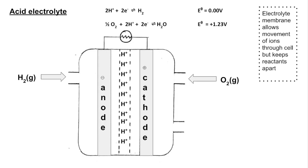We're going to focus on the hydrogen-oxygen fuel cell and then finish with the methanol fuel cell. The first hydrogen-oxygen fuel cell is one with an acid electrolyte, so you'll notice in the half equations we've got H⁺ ions. Hydrogen gas is coming in at the left going to the anode, and oxygen is going in at the right going to the cathode. The electrical potential for the oxygen half cell is more positive, so it runs in the forwards direction (left to right), and the hydrogen one will run in reverse (right to left).